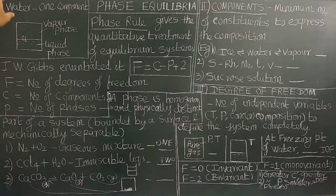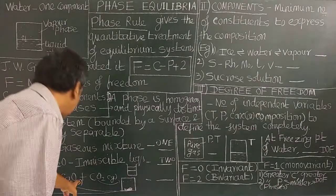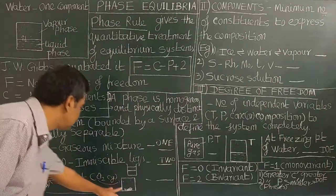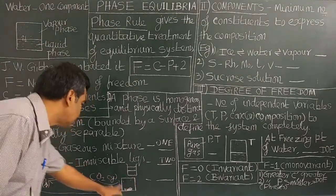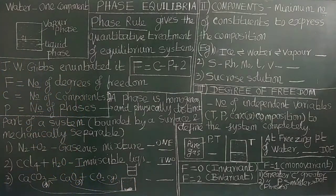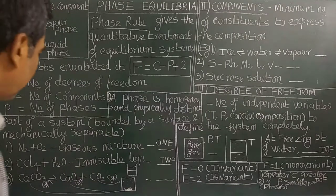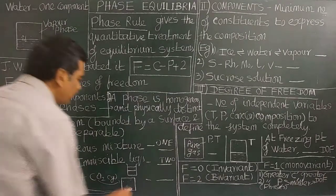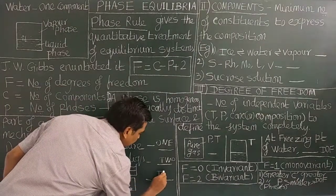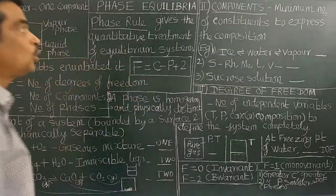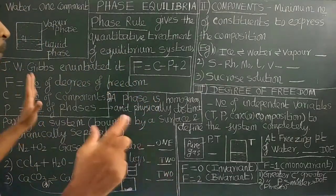This is a heterogeneous chemical equilibrium process. Since it is a closed system, equilibrium will be achieved. If you look at the solid phase, there are two phases. So the number of phases depends on the physical state of the system.